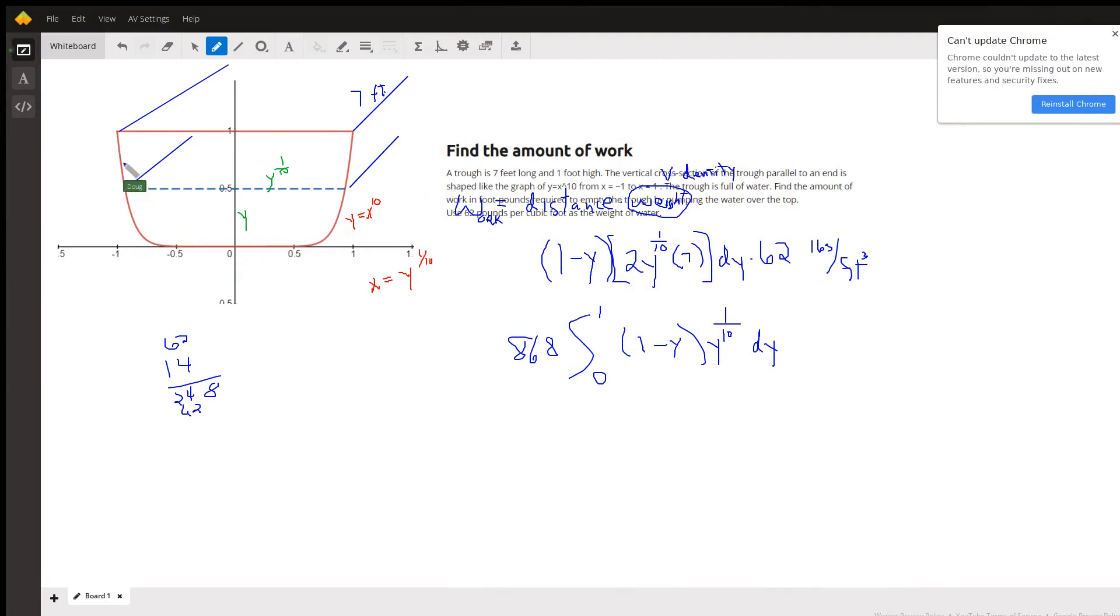Here's the end of the trough that's shaped like the graph of y equals x to the 10th from negative one to one.